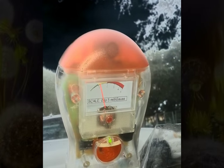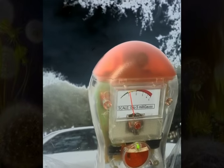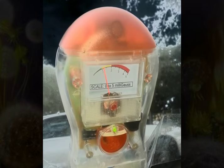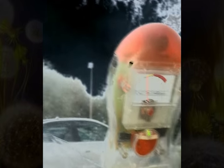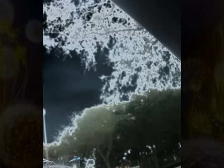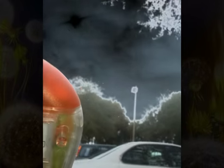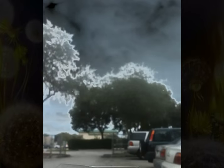These power lines run underneath US-1 and across 127th Avenue. There's a school that runs parallel with these power lines. I was driving on the right side of the road where the power lines are and my Gauss meter was going off the charts.